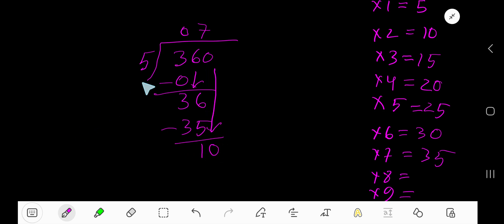Bring down the last digit. 5 goes into 10 how many times? 5 goes into 10, 2 times. Write 2, 2 times 5, 10.